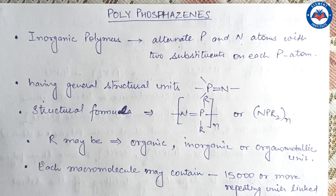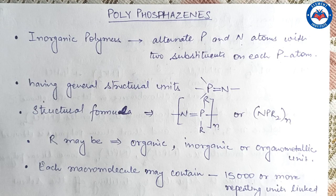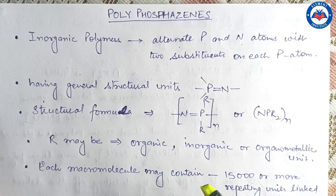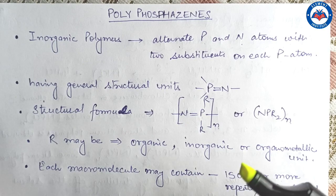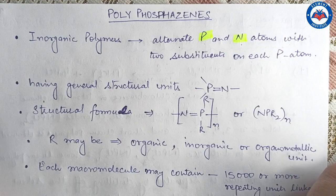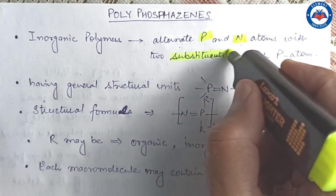Hello dear students, welcome again. This video is in continuation with my previous video in which I discussed the chemistry of silicones. Today I am going to discuss the chemistry of polyphosphazenes. Polyphosphazenes are another class of inorganic polymers which contain alternate phosphorus and nitrogen atoms, and two substituents are attached on each phosphorus atom.